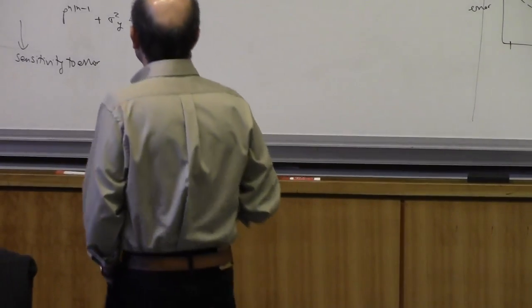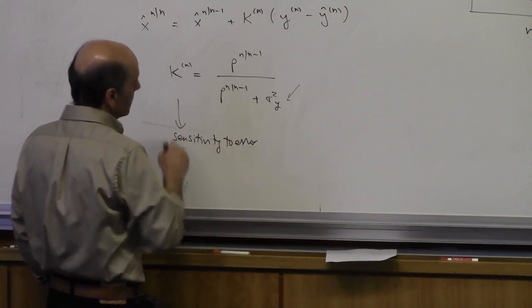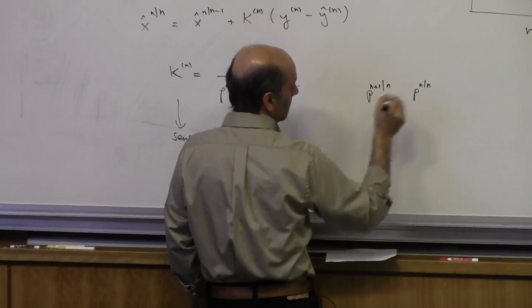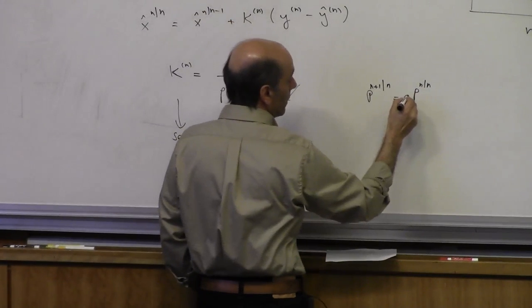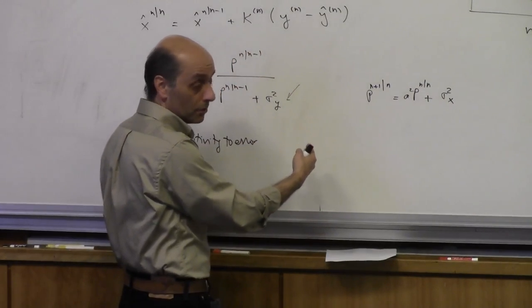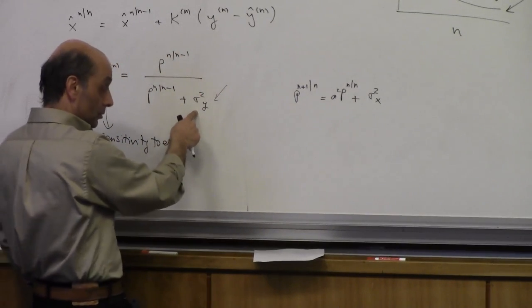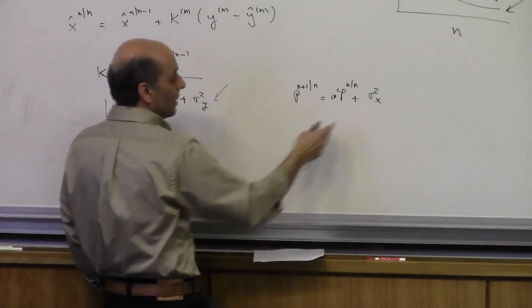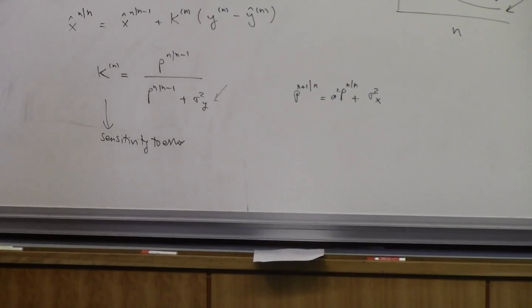Question: if sigma_y is varying too, is it the ratio of sigma_x to sigma_y that matters? Yes, it's more complicated. The posterior uncertainty p of n+1 given n equals p of n given n times a squared plus sigma squared_x. So a is also important, as is sigma squared_x. And sigma squared_y comes in here. So the evolution of the prior uncertainty always has sigma_x divided by a number that adds sigma_y to it — it's the ratio of sigma_y to the posterior uncertainty.